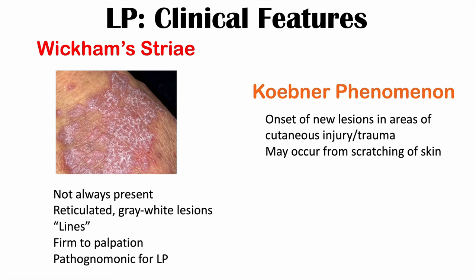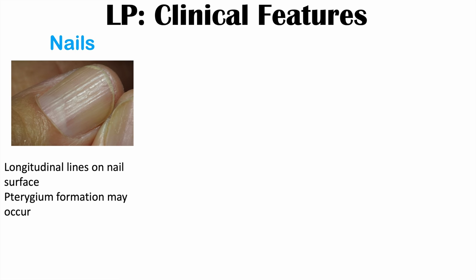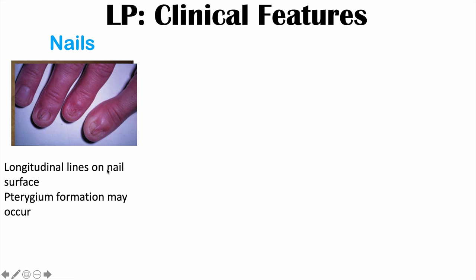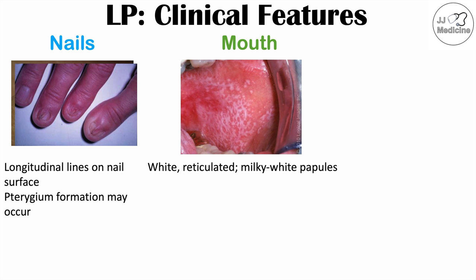The nails can also be affected. Nail lichen planus can present with longitudinal lines on the nail surface, and a pterygium can form in some cases. With regard to lesions in the mouth — oral lichen planus — it often appears as a white, reticulated lesion, commonly described as a milky white papule. The reticular form is the most common form of oral lichen planus.